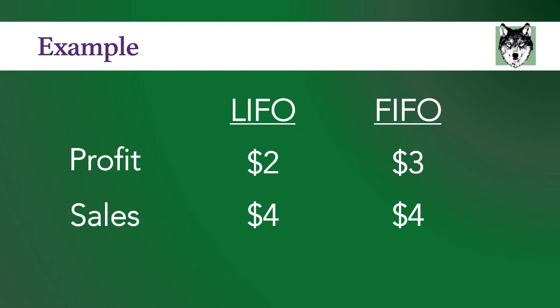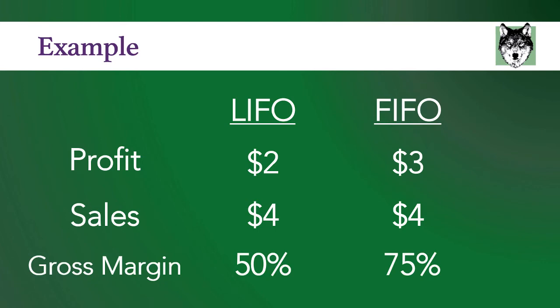Let us return to the earlier example. Under LIFO, your profit was $2 on sales of $4. LIFO has a gross margin ratio of 50%, whereas FIFO has a gross margin ratio of 75%. This tells you that for every $1 in sales, you're either getting $0.50 or $0.75 in profit. The difference is that one of those numbers is based off prices from one year ago, and this is important because it's telling you that your margins are shrinking. The argument for LIFO is that you want this information to reflect what is currently going on in the market — the most current prices, not prices from a year ago. That could seriously impact your investment decisions, and that is a huge argument in favor of LIFO.